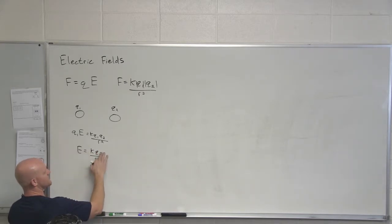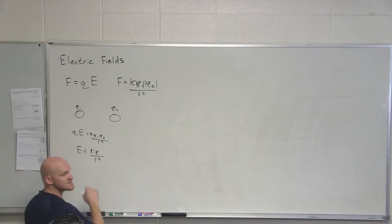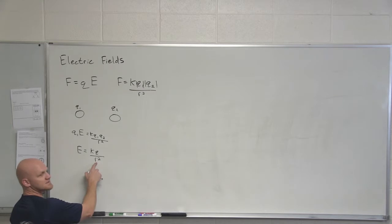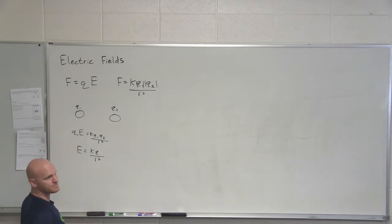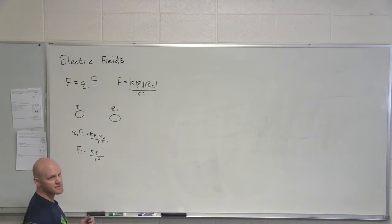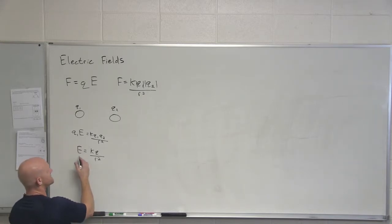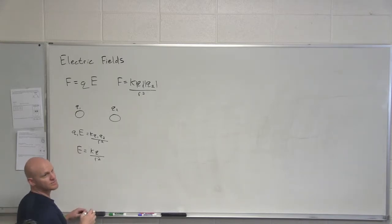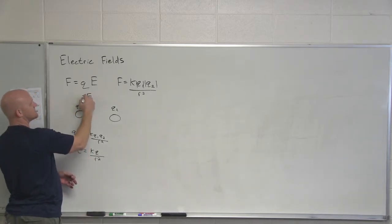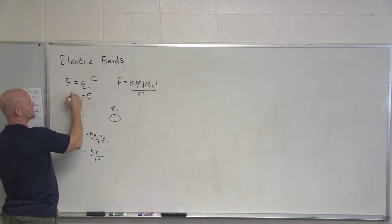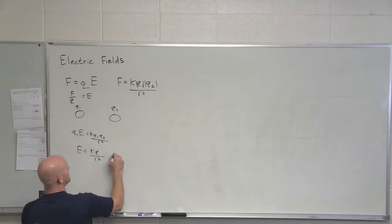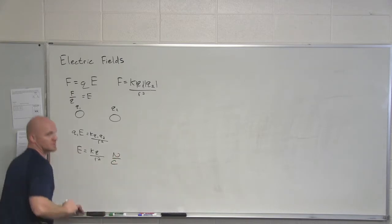This is the general relationship: it's just KQ over R squared. This is the electric field a point charge causes at a distance R away from itself. And this is a vector, so it has both direction and magnitude. Your electric field has units you can get by rearranging this equation — force over charge — which means it should have units of newtons per coulomb.